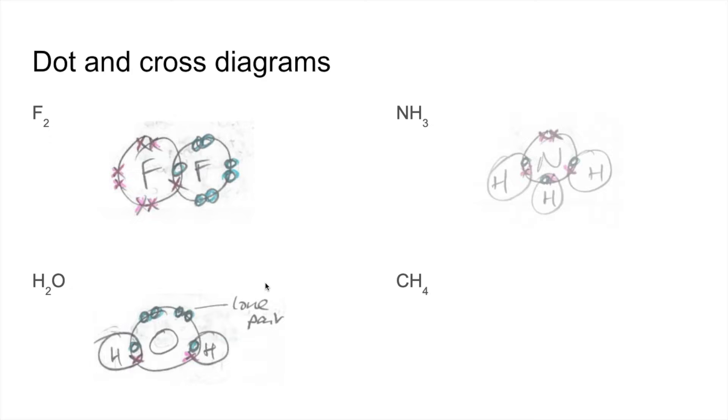Ammonia next. So nitrogen has five outer electrons. We've got three single covalent bonds to these three hydrogens and another lone pair here.